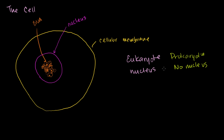Examples of prokaryotes—the two big groups—are bacteria and archaea. Archaea are really interesting; we know very little about them. They were originally thought to be types of bacteria, but now people realize they're a completely separate group. We've actually observed only a very small subset of them.